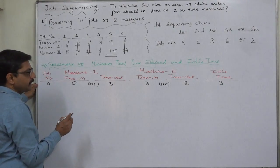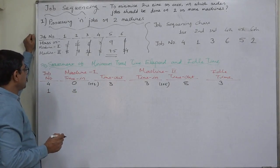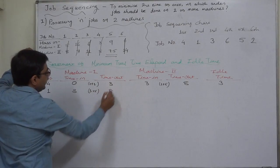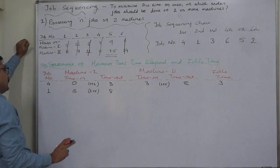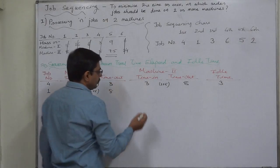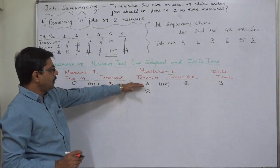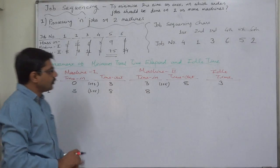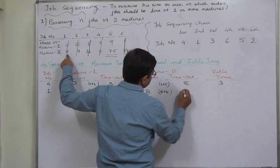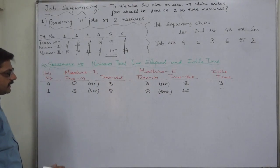For second and subsequent machines, the first time in always becomes the idle time — that machine has to wait that number of hours before getting the job from the previous machine. On machine 1, after completing job number 4, it is the turn of job 1. This 3 becomes the starting point or time in for job number 1 on machine 1. Machine 1 requires 5 hours, so 3 plus 5 gives 8 as time out for job number 1. Since both values are 8, there is no need for comparison or idle time calculation.